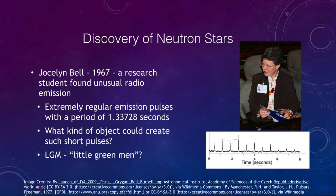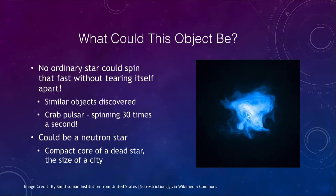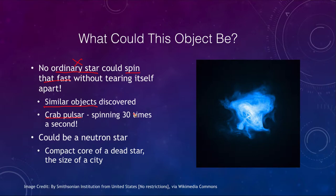What had Jocelyn Bell found? First of all, there was no way it could be an ordinary star, because it could not spin fast enough without tearing itself apart. If we tried to spin the Sun once a second, the centrifugal forces would tear it apart. It had to be something very compact, very small, and extremely strong. Then we began to find other similar objects — in fact, in the Crab Nebula, the Crab Pulsar was spinning 30 times a second, which made the problem even harder.